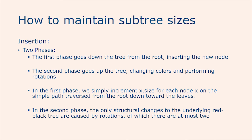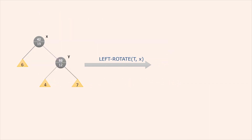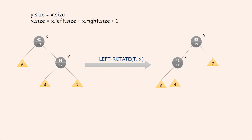A rotation is a local operation — only two nodes have their size attributes invalidated, specifically the nodes incident on the link around which the rotation is performed. Since at most two rotations are performed during insertion into a red-black tree, we spend only O(1) additional time updating size attributes in the second phase. Thus, the total time for insertion into an n-node order statistic tree is O(log n), which is asymptotically the same as for an ordinary red-black tree. We add two lines to the right-rotate and left-rotate operations of the red-black tree, and the visualization shows how the attributes are updated.